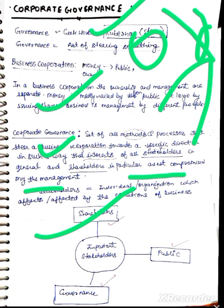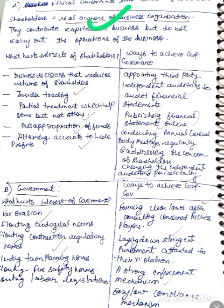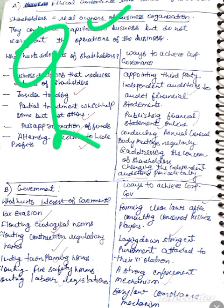Now, who are the stakeholders in a business entity? First of all, shareholders or owners. Then the public and the government as well. Management provides direction, while shareholders and the public provide capital to the company, but management — the other people — run it.